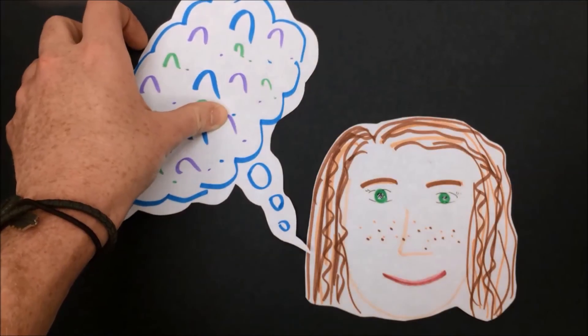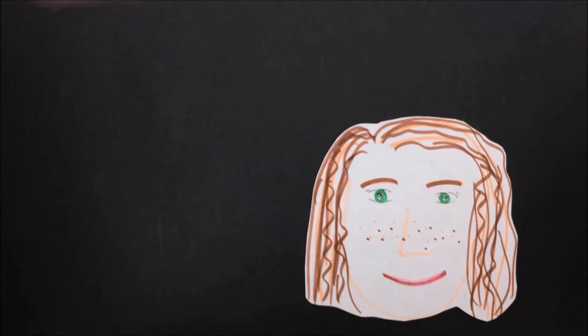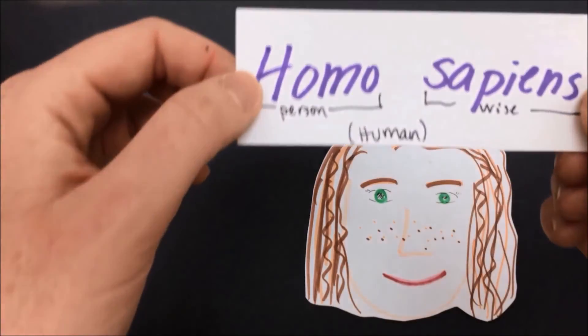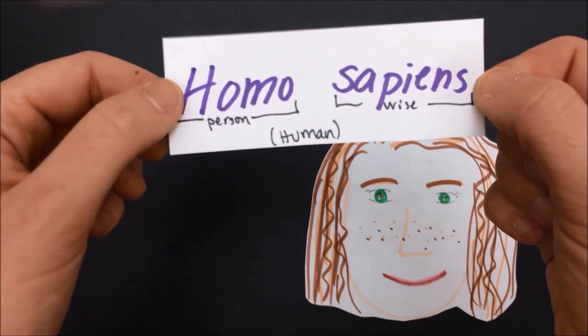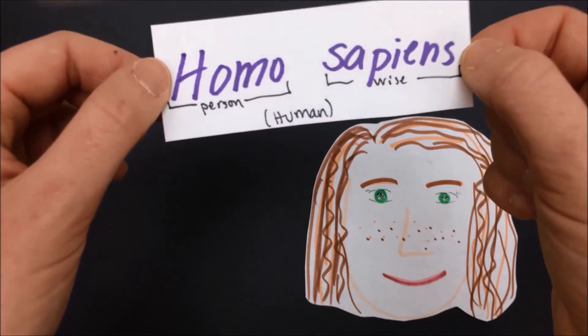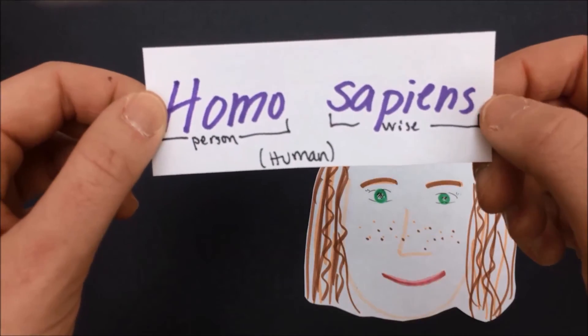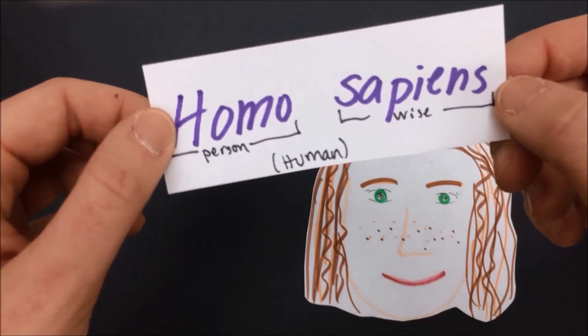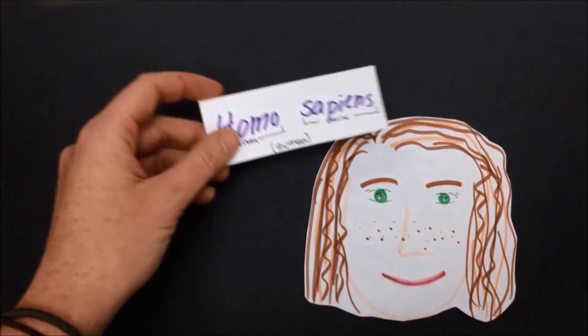Hopefully this review has helped clear up any confusion. Now you can feel like you can really live up to your species name, Homo sapiens, or wise person. Now here's a quick rapid-fire review of everything.